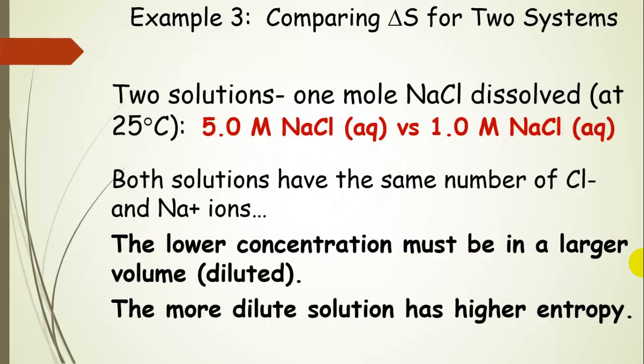Thinking about the fact that they both have the same number of chloride anions and potassium cations, then we can think about the concentration. If we have a lower concentration, that indicates that it's more dilute, which means it must be in a larger volume. And since it's in a larger volume, there are more potential places for those ions to be. There are more microstates, so the entropy is higher.